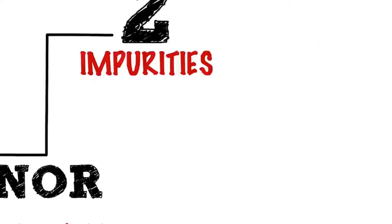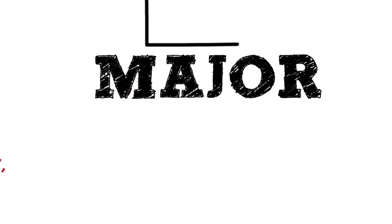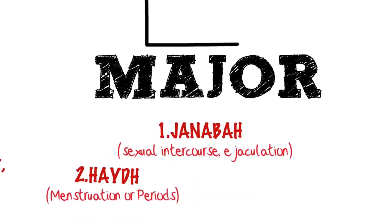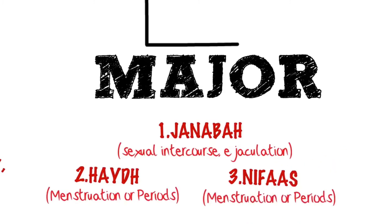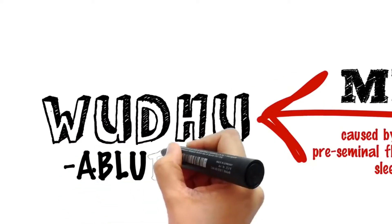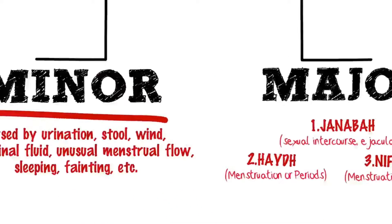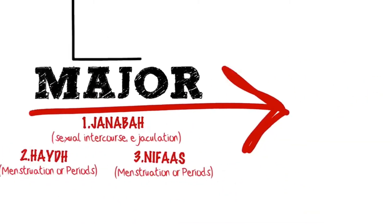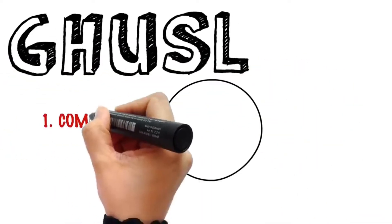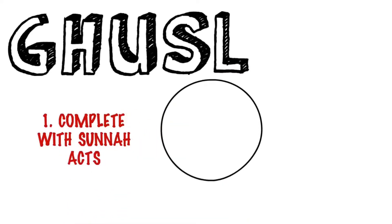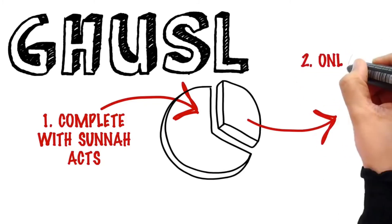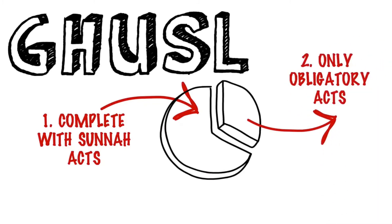There are two kinds of ritual impurities: the minor impurity and the major impurity, which occurs as a result of Janabah, Haid, or Nifas. To achieve tahara from the minor impurity, you only need to renew your wudu (ablution), whereas in the case of major impurity you need to take a Ghosli. Ghosli can be taken in two ways: a complete Ghosli with all the Sunnahs of the Prophet, or a partial, sufficient Ghosli which means only doing what is obligatory.